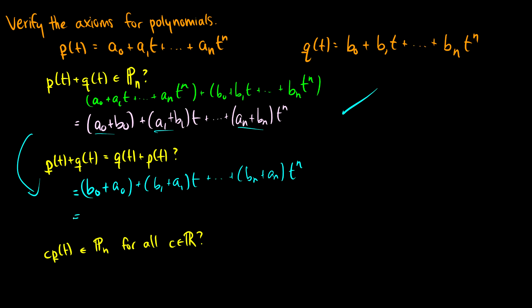So we can expand, and then we would end up with b_0 plus b_1 t, plus all the way up to b_n t to the n, and then we could add our a_0 plus a_1 t, all the way up to a_n t to the n. So the second axiom is good too.